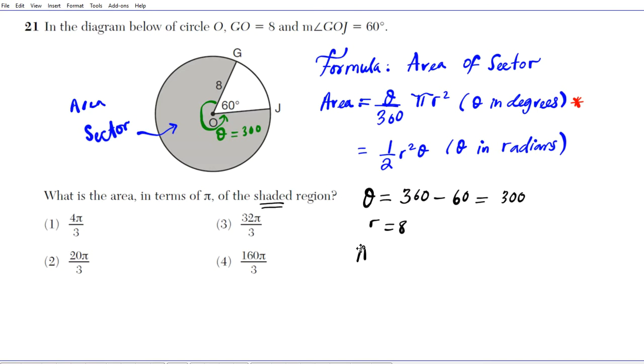So our area is 300. So let's rewrite the formula again so we don't get it confused. Theta over 360 times pi r squared. So we already calculated theta to be 300 over 360 times pi times the radius squared.